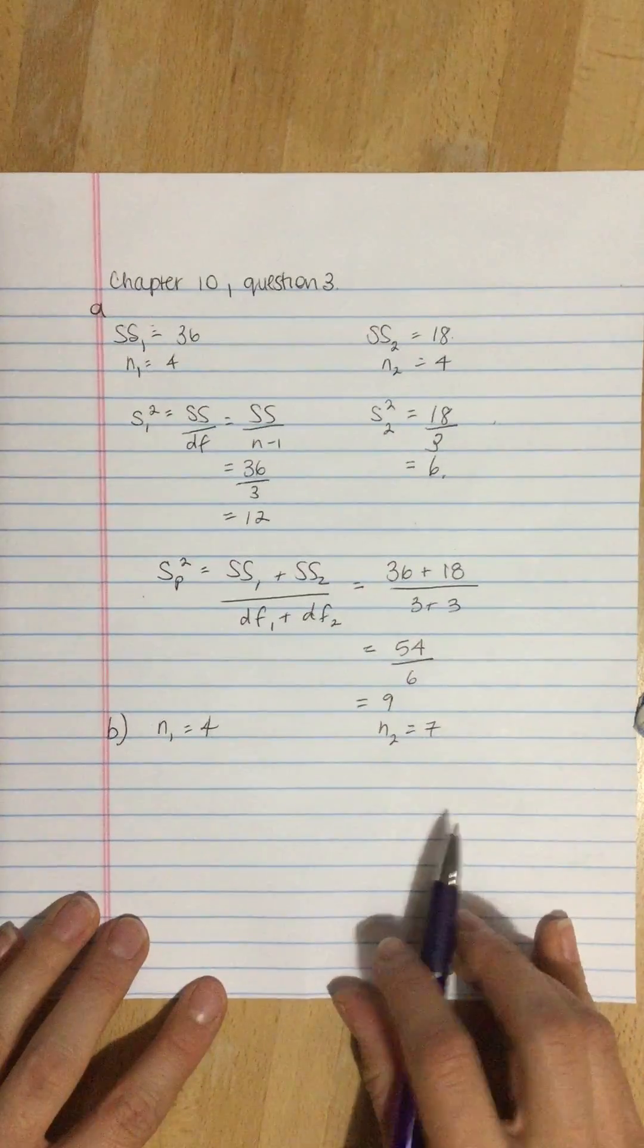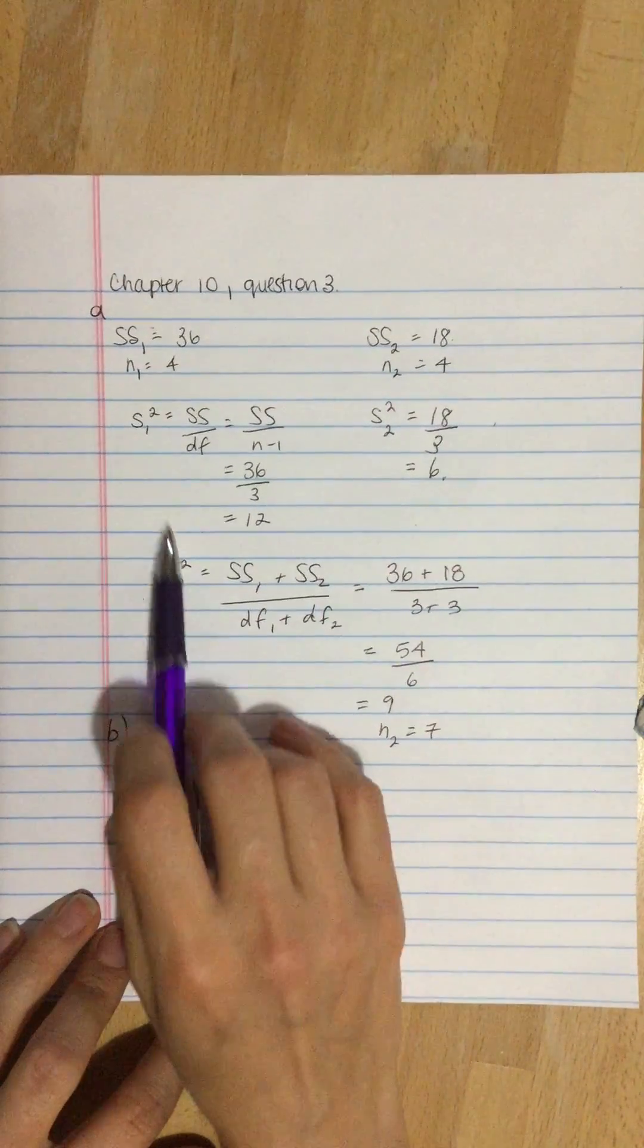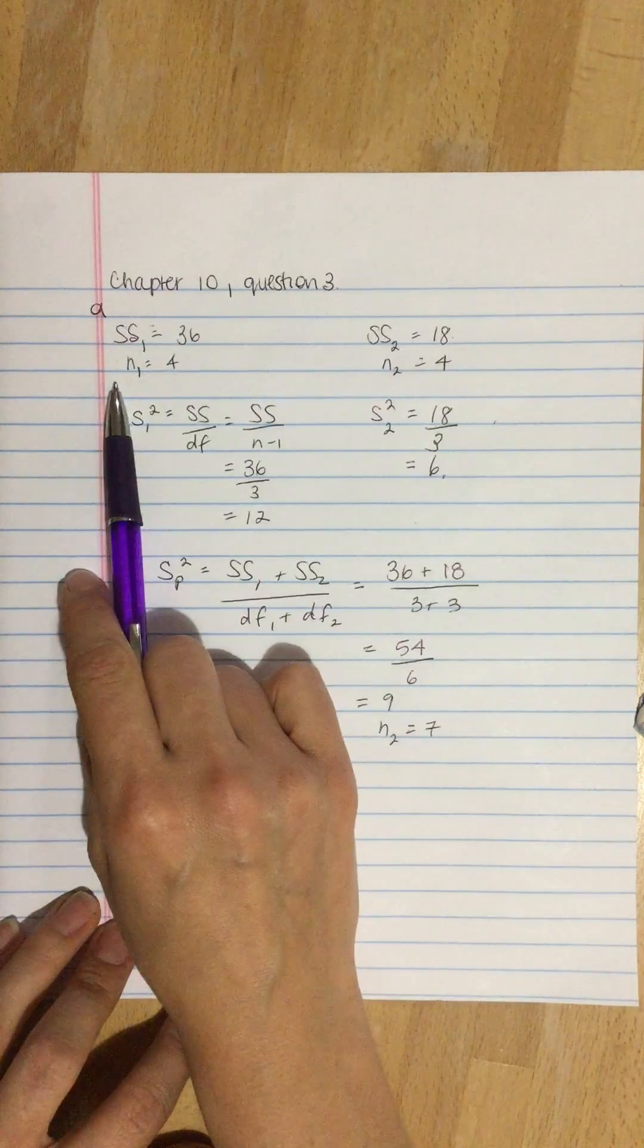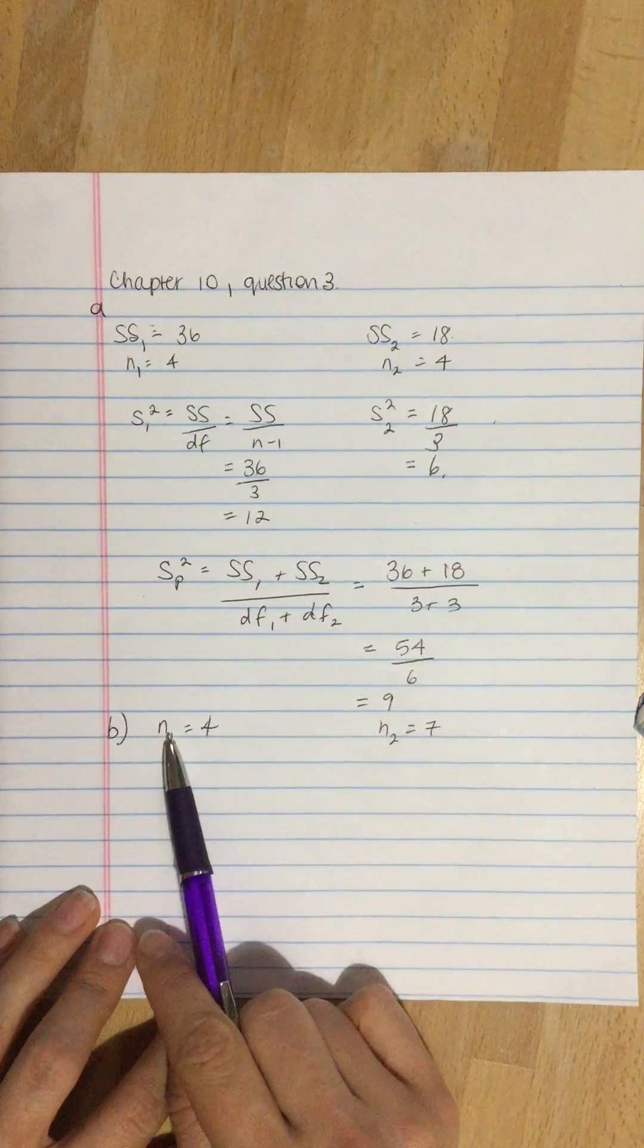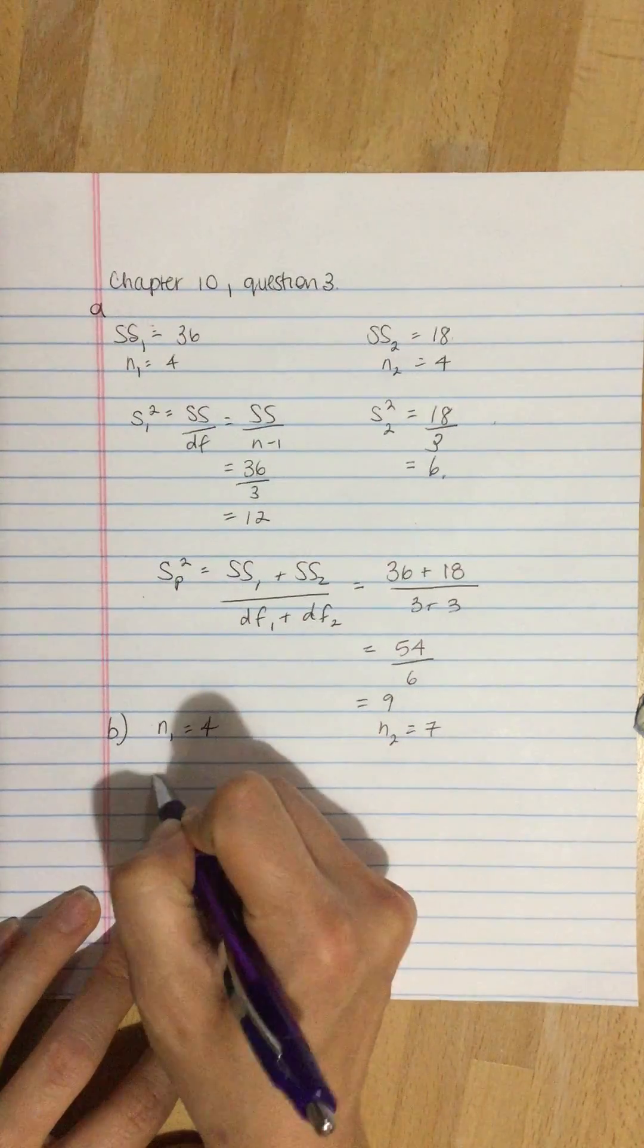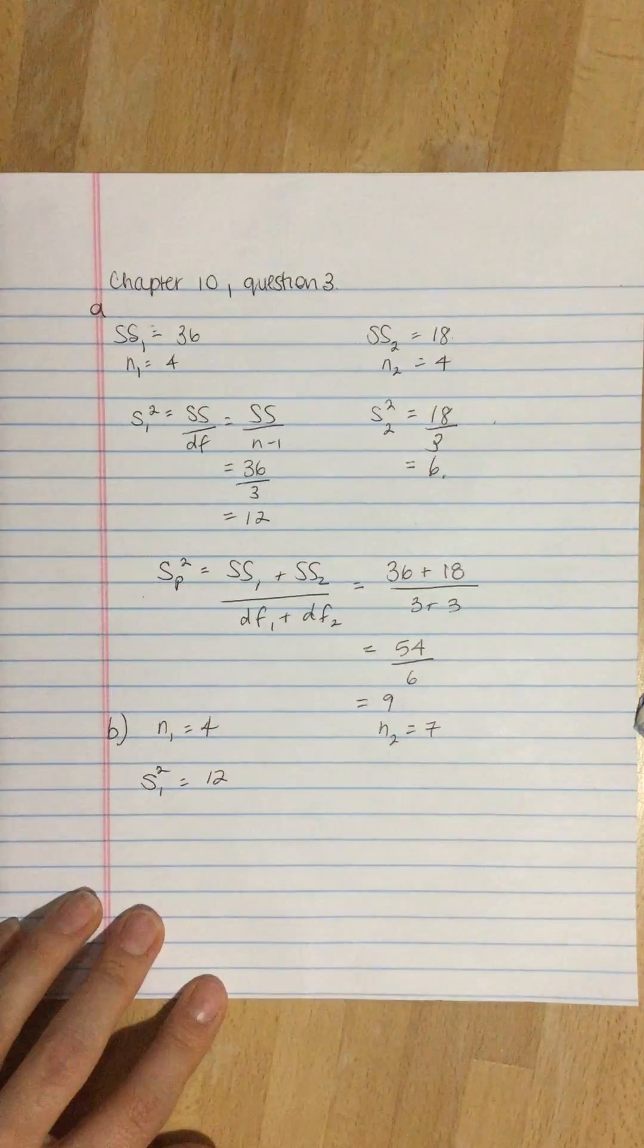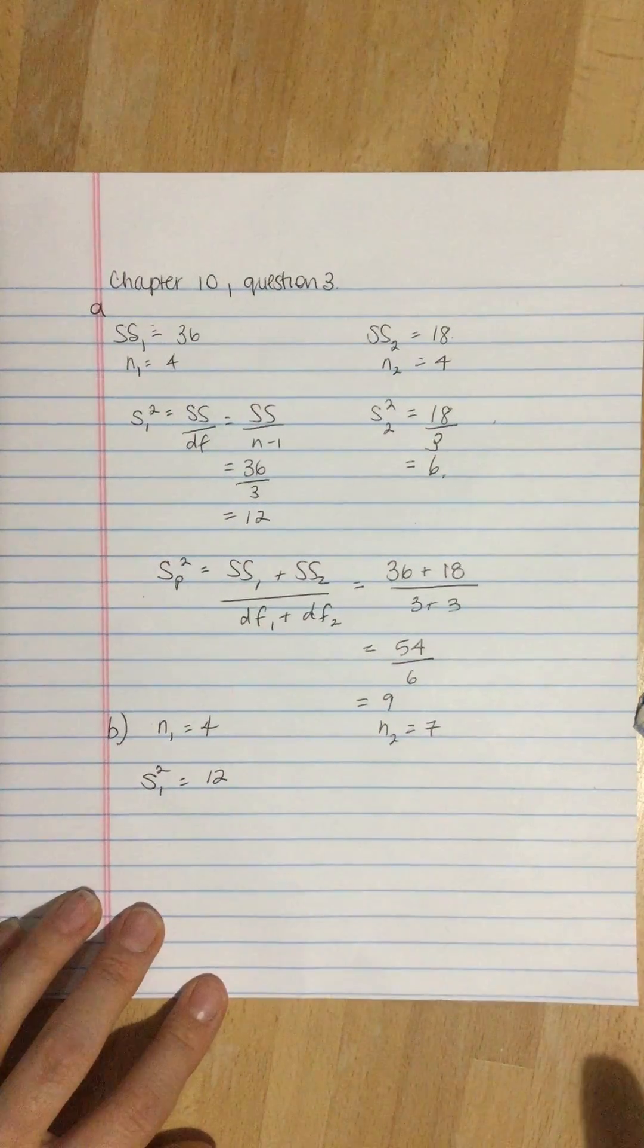So what we're going to do, we don't need to calculate this again. The sum of squares hasn't changed. The size of the sample hasn't changed. So here, the variance is 12. That doesn't change because the numbers haven't changed.